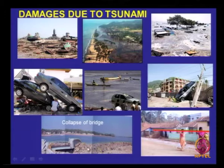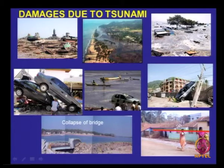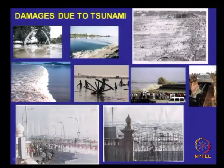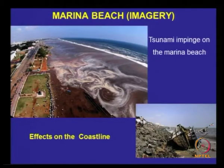A bridge got collapsed, and at certain locations the red mark shows the level of inundation — the height of inundation. Somewhere in Chennai you see the flooding in the Marina Beach and you can see the water level somewhere in Chennai. The Marina Beach imagery shows the tsunami impinging on the beach, and its effects on the coastline.